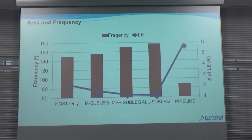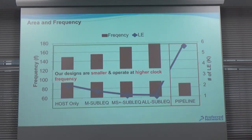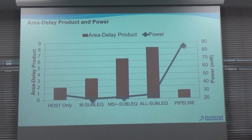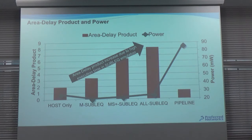Looking at the area and frequency graph: the bars show processor frequency and the lines show circuit area. As we move more instructions into the sublet, we can increase frequency while also reducing circuit area. In contrast, the pipeline processor operates at a lower frequency and has a much larger circuit area. Regarding area-delay product, adding more instructions to sublet increases execution time due to the multi-cycle sublet operations. For power consumption, moving instructions to sublet reduces power significantly, while the pipeline processor has very high power — roughly 75% power savings are achievable.